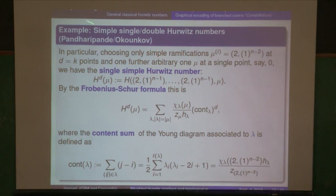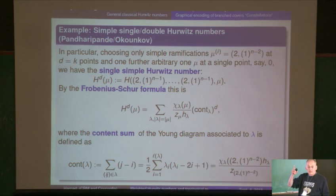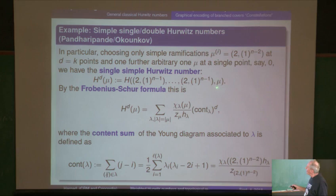Now take the case where you only have simple branching — that means the partitions are all (2,1,1,...,1). There's a pair of sheets that coincide and the others don't. The Hurwitz number for that looks like this. We have one privileged point at zero — if we put a second privileged point at infinity, that would be Okounkov-Pandharipande, so those are called single or double Hurwitz numbers.